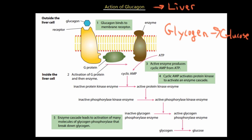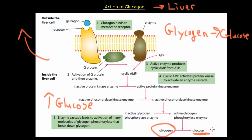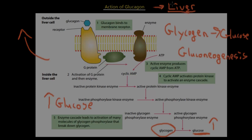Because of the high concentration of glucose building up inside the liver cells, glucose begins to diffuse out into the blood, increasing the blood glucose concentration. Additionally, effects can be amplified by gluconeogenesis — the production of glucose using amino acids and lipids — which also occurs within the liver.